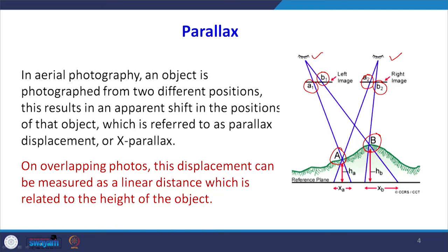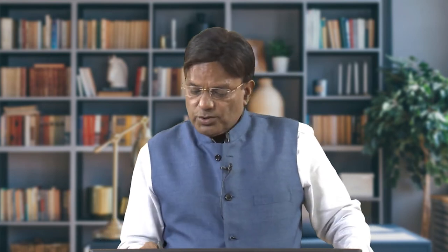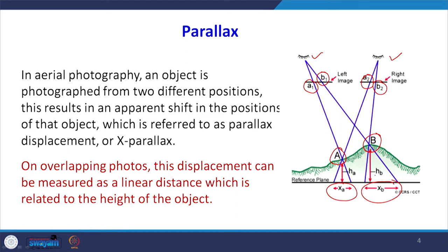When we have overlapping photographs to see the 3D view of the model, parallax is measured as a linear distance on the photograph, and this linear distance can be related to the height of the objects HA and HB. The linear distances we are measuring are shown as xA and xB in the diagram — these are the distances measured on the two photographs.